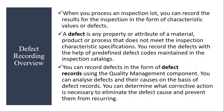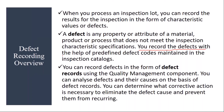A defect is any property or attribute of a material, product, or process that does not meet the inspection characteristic specification. So a defect is nothing but an attribute of a material which is not meeting the specifications — not within the limits, not as per the specification. You record the defects with the help of predefined defect codes maintained in the inspection catalogs. I will show this in the system — how to do defect recording using a catalog profile. You can record defects in the form of defect records using the QM component.